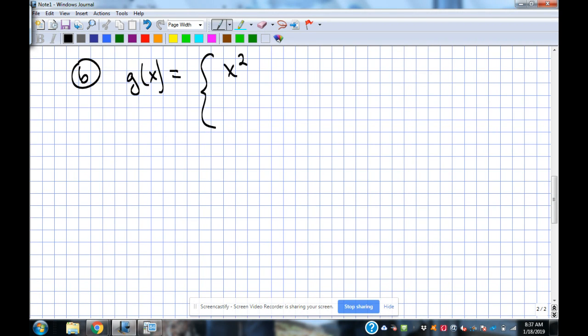The first piece has x squared. It happens when x is less than 2. And then the second piece is negative 3x plus 5. Let's say that's happening when x is greater than 2. There's our piecewise defined function.